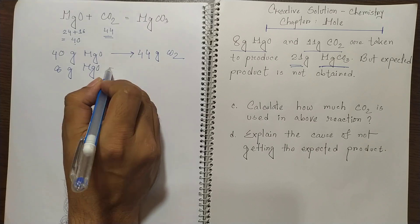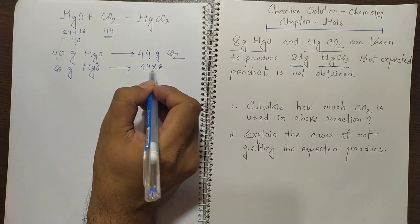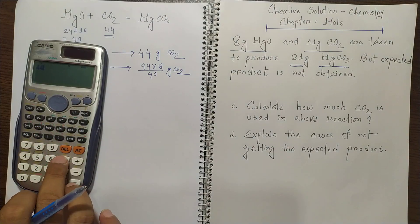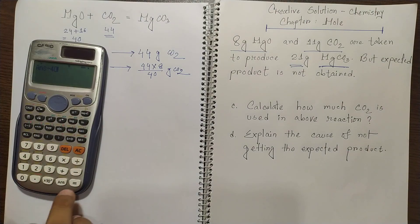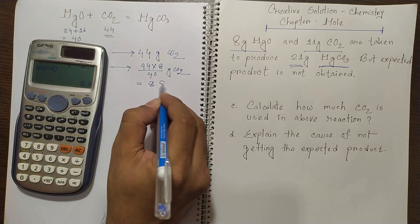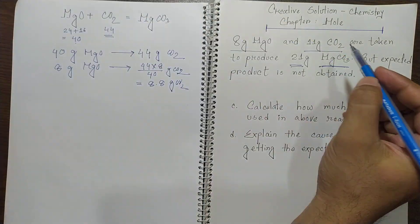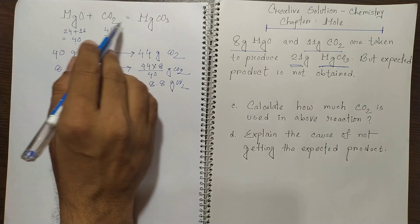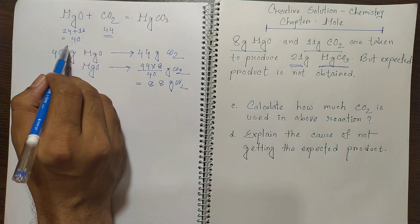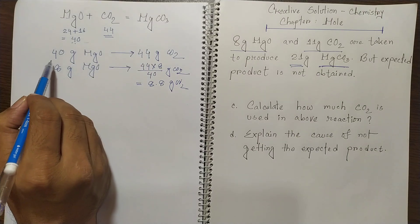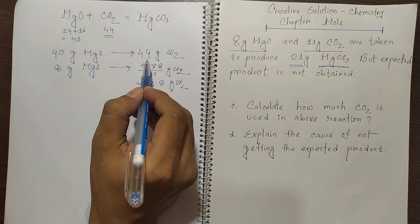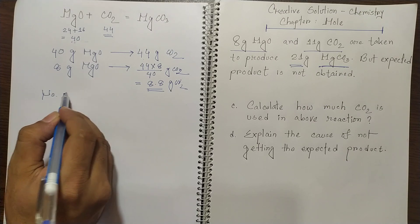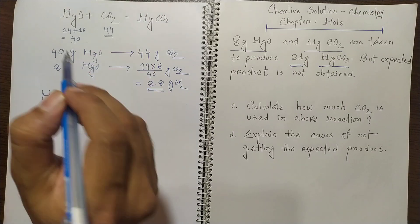So 8 gram magnesium oxide will be reacting with (44 × 8) / 40 gram carbon dioxide. This equals 8.8 gram carbon dioxide. But here 11 gram carbon dioxide is taken. According to the reaction, taking the standard molar masses from the balanced equation, 40 gram magnesium oxide reacts with 44 gram carbon dioxide, so only 8.8 gram CO₂ is actually needed.